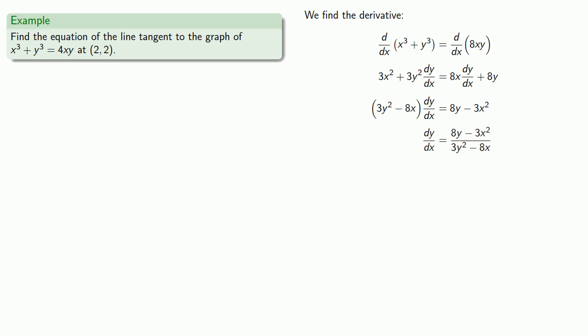Now our derivative requires the values of both x and y. Fortunately we have them. Substituting those in, we find the slope of the tangent line. We find that our tangent line has slope negative 1 and passes through the point (2, 2). So the equation will be...